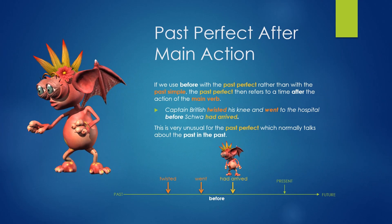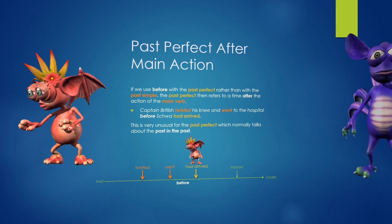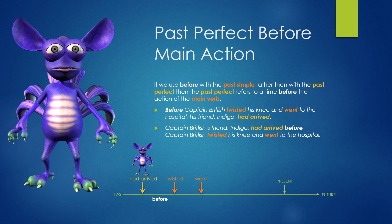Past perfect after main action and past perfect before main action. If we use before with the past perfect rather than with the past simple, the past perfect then refers to a time after the action of the main verb: Captain Britlish twisted his knee and went to the hospital before Schwa had arrived. This is very unusual for the past perfect. If we use before with the past simple, then the past perfect refers to a time before the action of the main verb: Before Captain Britlish twisted his knee and went to the hospital, his friend Indigo had arrived.